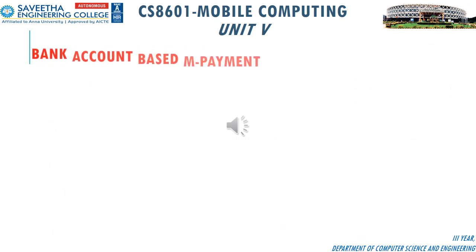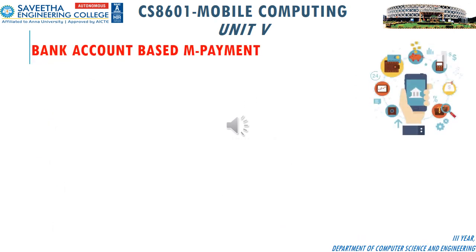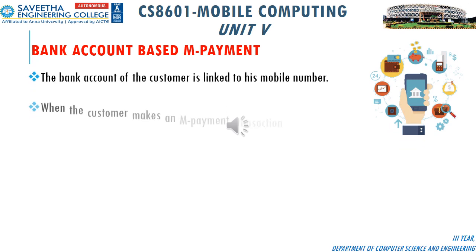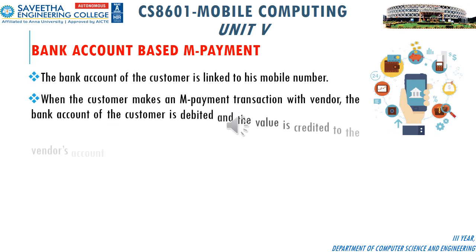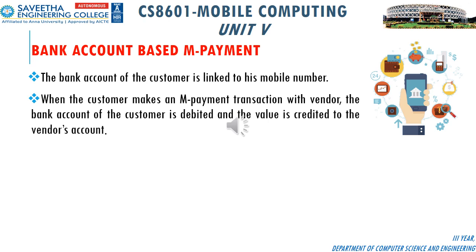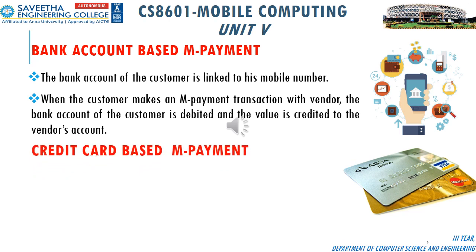Bank account-based m-payment works as follows: the bank account of the customer is linked to their mobile number. When a transaction is made, the customer's bank account is debited and the value is credited to the vendor's account.